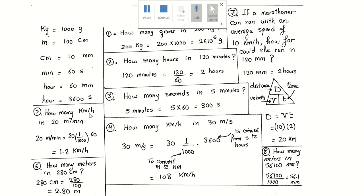Problem number five: how many kilometers per hour in 20 meters per minute? Convert meters to kilometers by dividing by 1000, then convert minutes to hours. Since one hour equals 60 minutes and minutes is in the denominator, multiply by 60. The answer is 1.2 kilometers per hour.